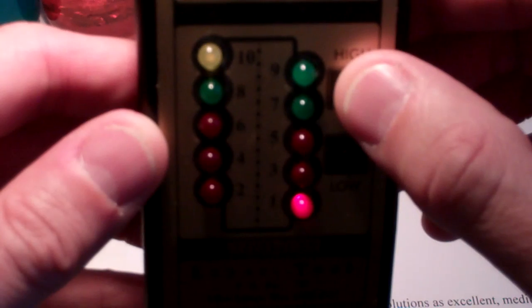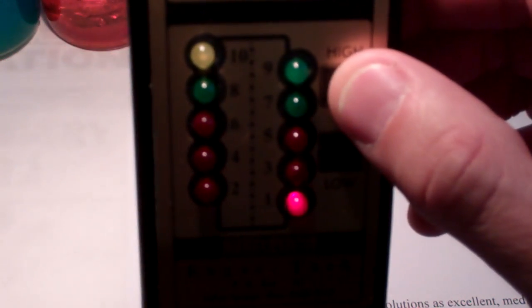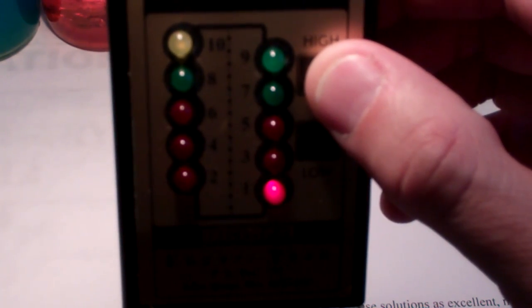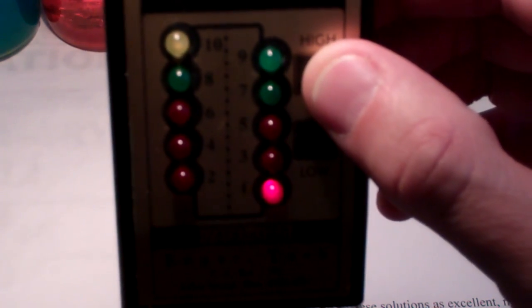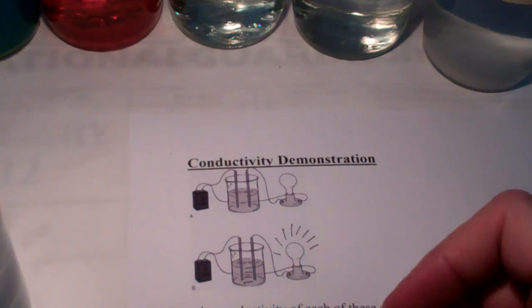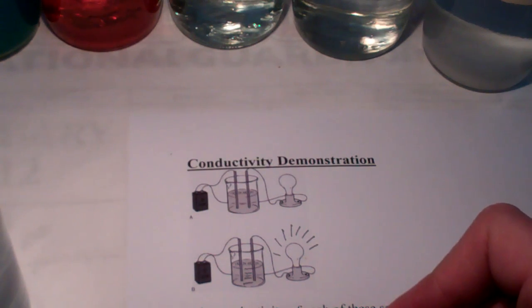So, now I'll press the high button, and you can see the number one lights up. Now, since I've pressed the high button, we're going to multiply that by ten. So, we're going to say that conducts at a conductivity level of ten. We won't use any units here. So, for distilled water, it does conduct on our conductivity meter at ten units.